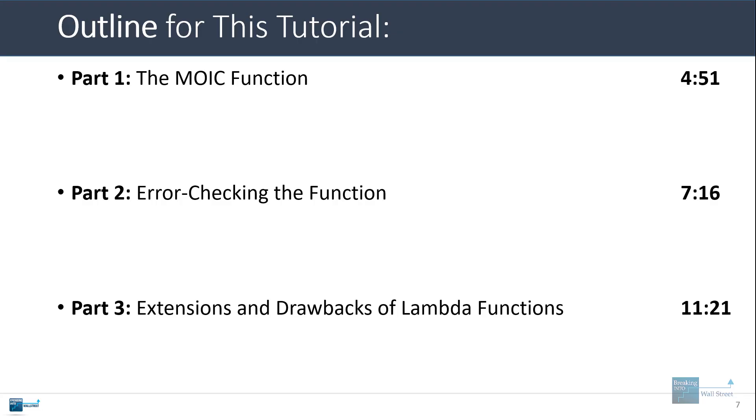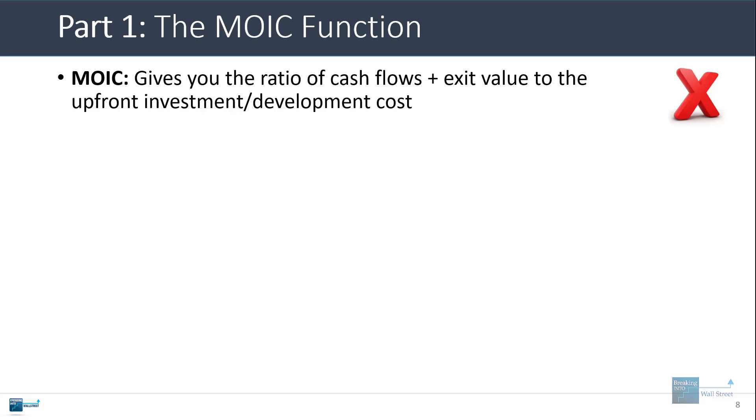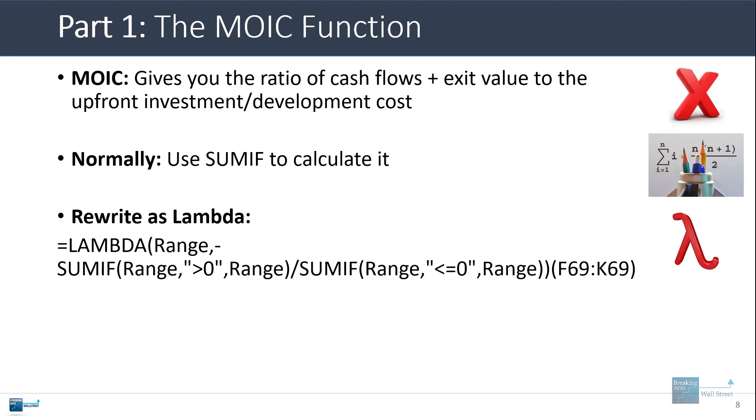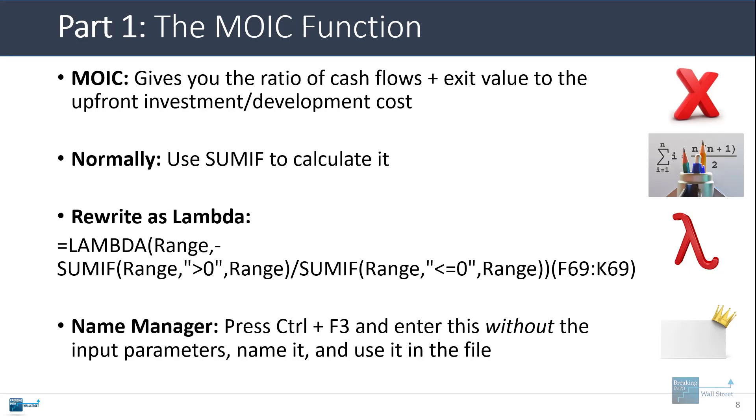So as I was saying before, the multiple invested capital tells you the ratio of the cash flows and exit value of an investment to the upfront investment or development cost. Normally you use SUMIF to calculate it, but you could easily rewrite it as a lambda function. And then you can also define it in the name manager, and I'll show you how to write this type of function, test it, and then actually use it in the name manager right now.